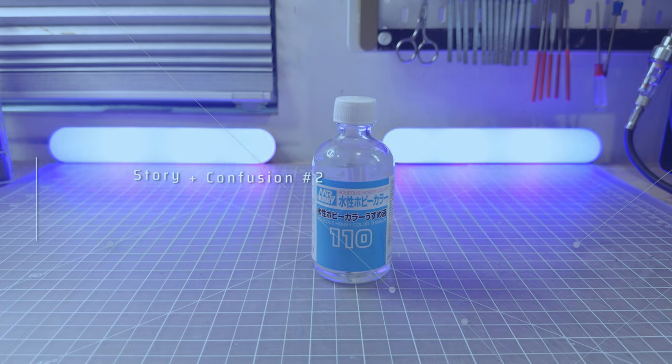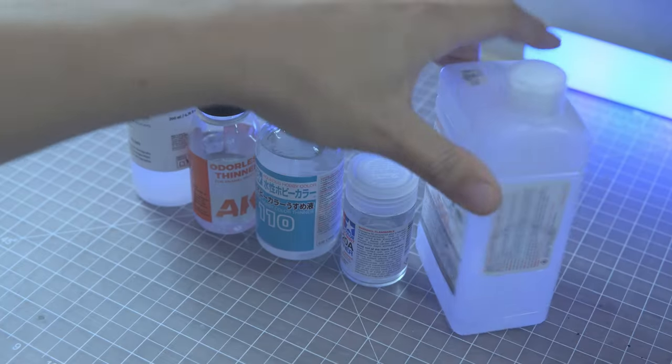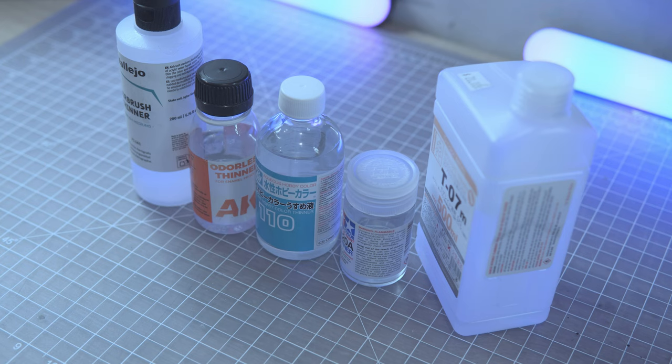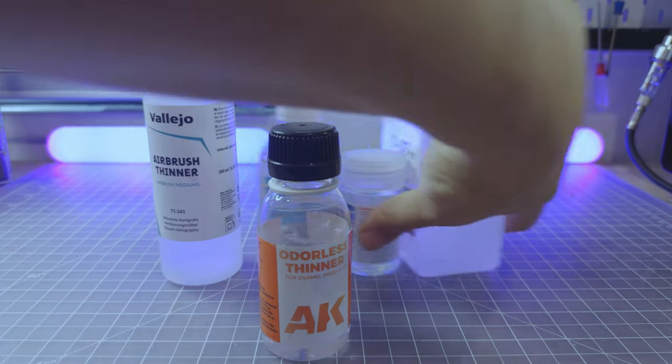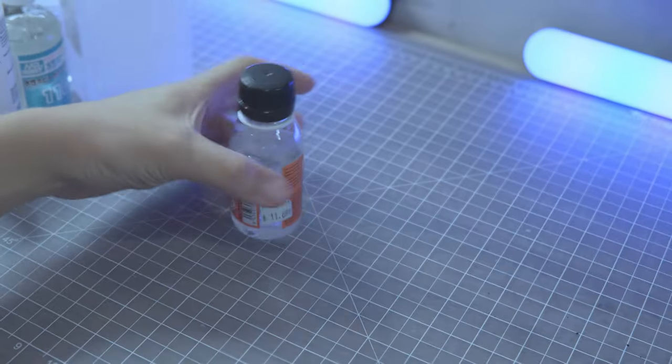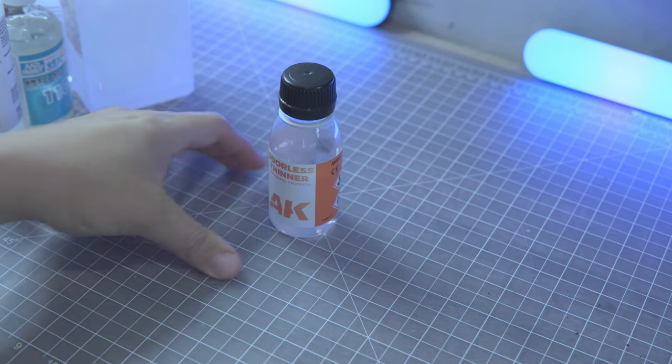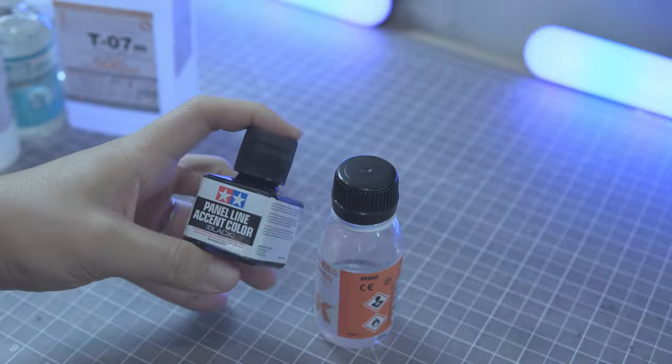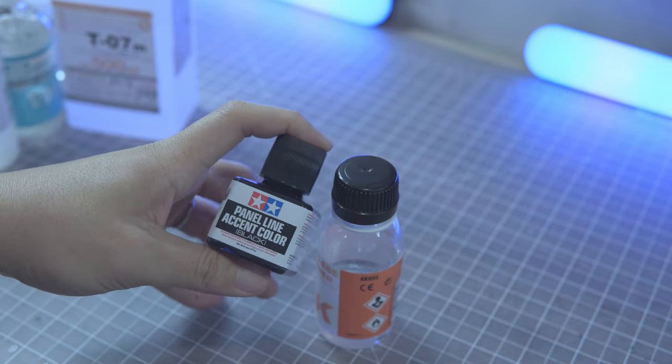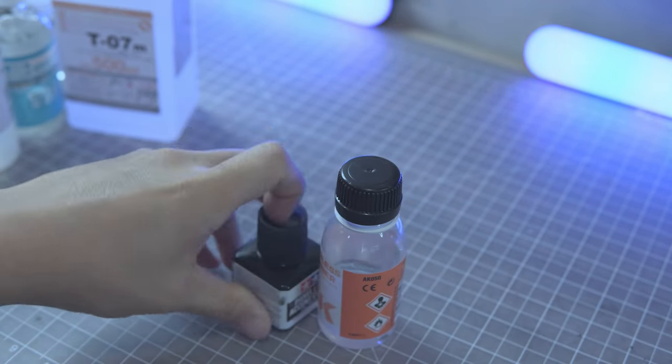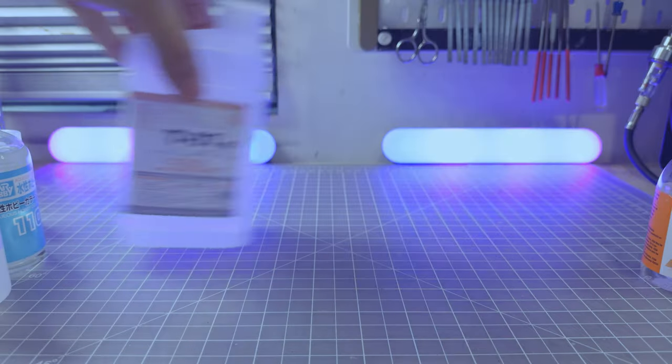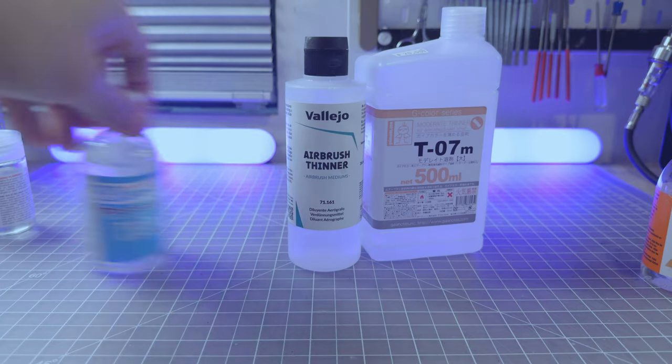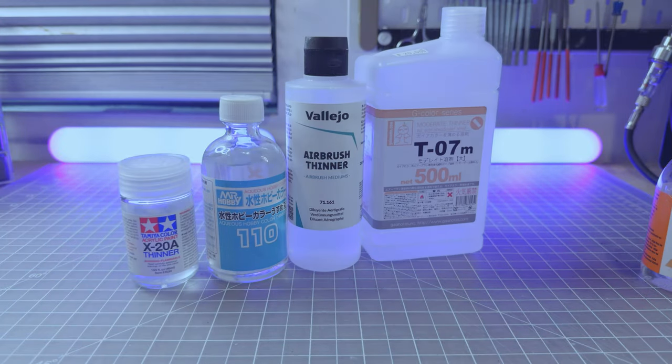Like, do we really have to use all these thinners to be able to paint our Gunpla? This enamel thinner is kind of a must if you're doing panel line with the panel line accent color because if you use lacquer to erase the panel line, it will erase the acrylic paints too. But do we really need all these different types? Not really.